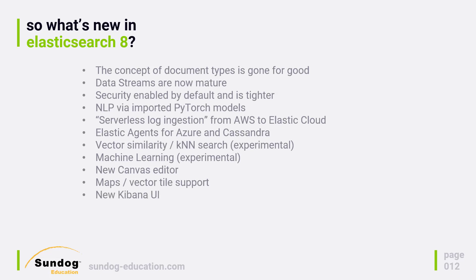The Kibana UI has also changed a lot in Elasticsearch 8, not just in Kibana itself but also in the alerts user interface — so there are lots of look and feel changes to get used to. Finally, they've added new features to Enterprise Search, though this is not an open source feature. Elastic App Search allows you to incorporate Elasticsearch into your mobile or software-as-a-service applications, and Elastic Workplace Search allows you to search across sources like Google Drive, Slack, or Salesforce.